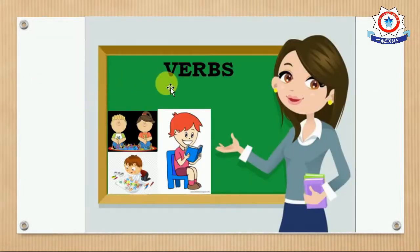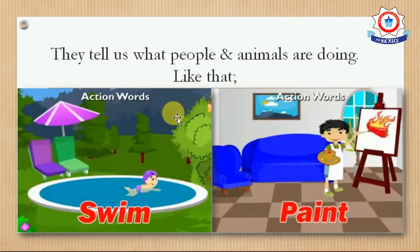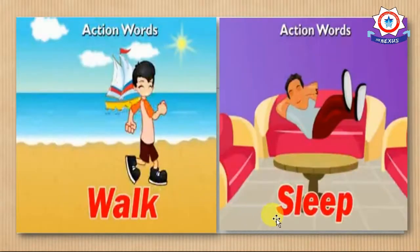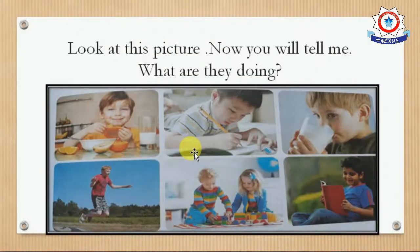Verbs are action words. They tell us what people and animals are doing — like swim, paint, walk, sleep, ride, push, and more. Here are some more action words. Look at this picture and you will tell me what they are doing.